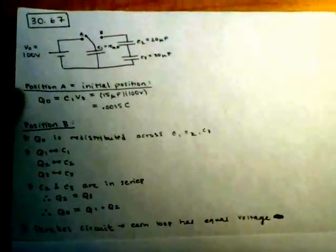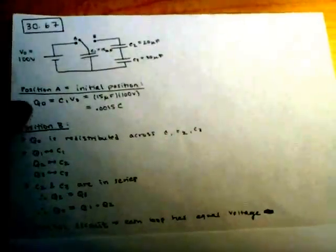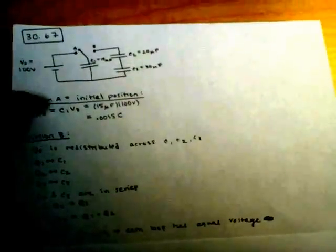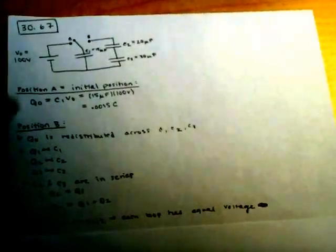To begin this problem, we start with position A, which is the initial position, and we note that Q initial equals C1 times V0, which is 15 microfarads times 100 volts, which equals 0.0015 coulombs.